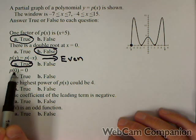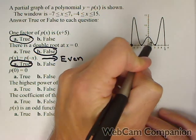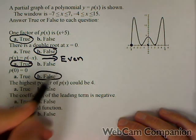p(0) equals zero. That means if the input is zero, the output is zero. That means it would have to go through the origin, which this graph does not, so it's false.